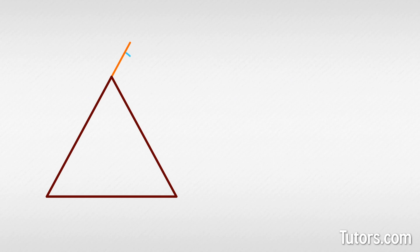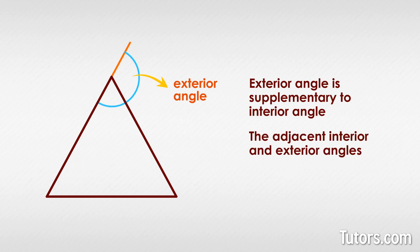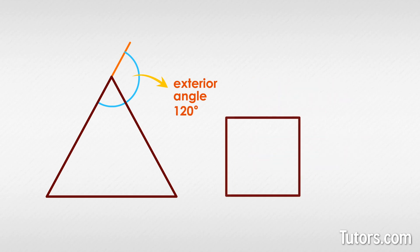Exterior angles are created by extending one side of the regular polygon past the shape, then measuring in degrees from that extended line back to the next side of the polygon. Since you are extending a side of the polygon, that exterior angle must necessarily be supplementary to the polygon's interior angle — together the adjacent interior and exterior angles add to 180 degrees.